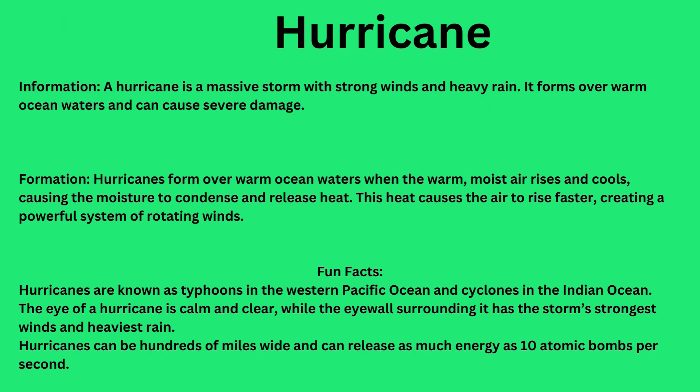Hurricane. A hurricane is a massive storm with strong winds and heavy rain. It forms over warm ocean waters and can cause severe damage. Hurricanes form over warm ocean waters when the warm, moist air rises and cools, causing the moisture to condense and release heat. This heat causes the air to rise faster, creating a powerful system of rotating winds.